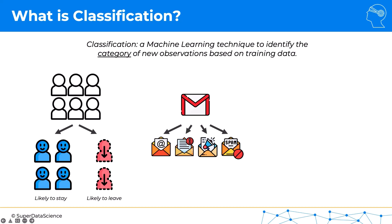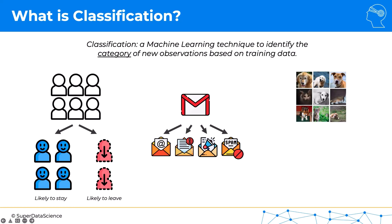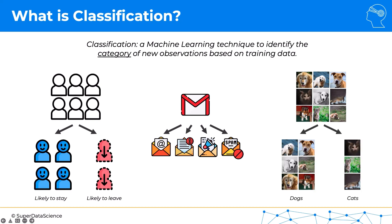Another application is image recognition. For instance, here we have images of dogs and cats — classification would be able to separate dogs from cats. Those are just a few examples of how powerful this tool is. There are lots of algorithms that fall into this family of classification in machine learning, and I'm very excited to explore this section further with you. Until next time, enjoy machine learning.